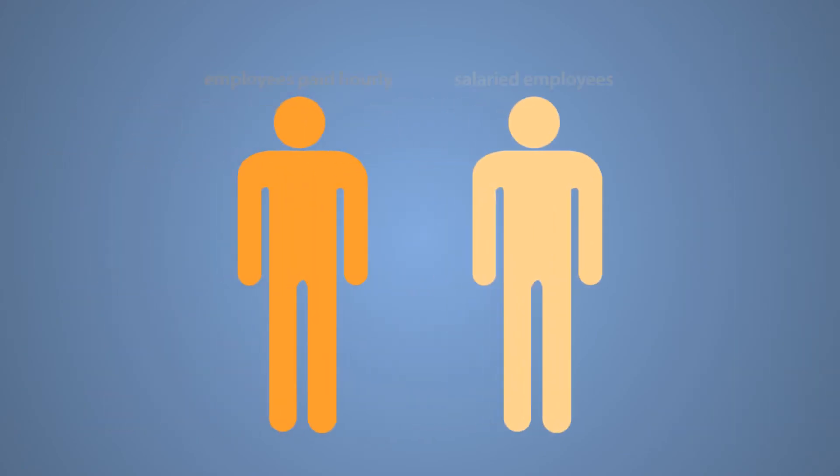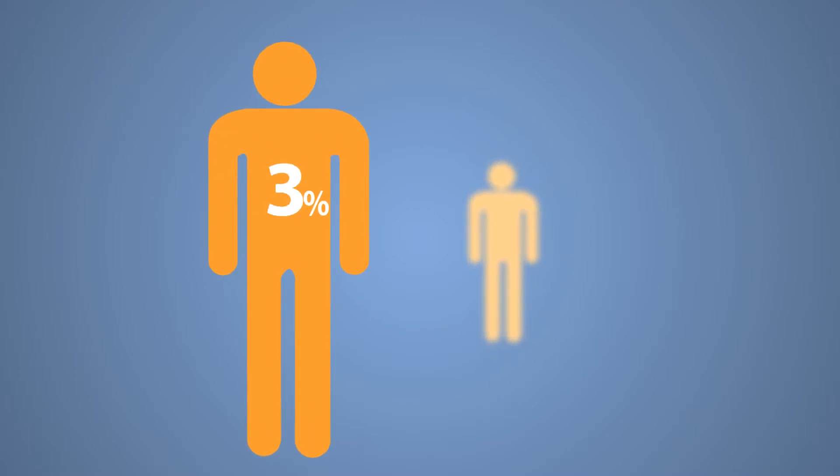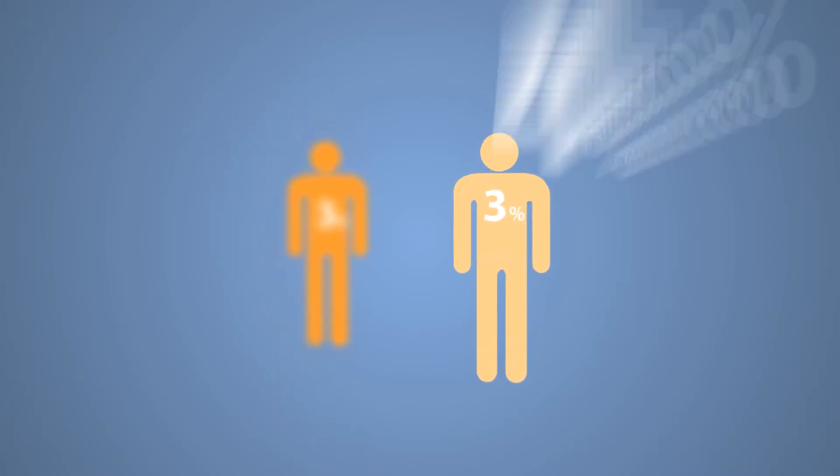How much depends on our performance and your role. Employees paid hourly can earn between 1 and 3% of annual earnings. Salaried employees can earn between 2 and 6% of annual salary.